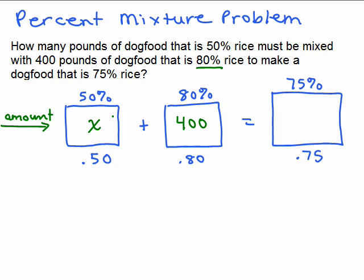If I pour them together, I've got X pounds plus 400 more pounds. So in this big vat I have X plus 400 pounds.